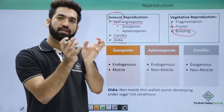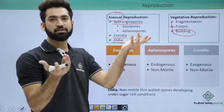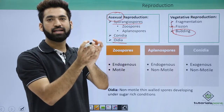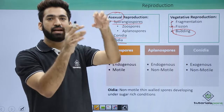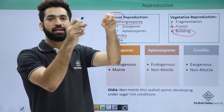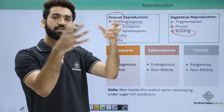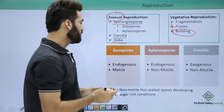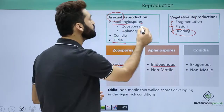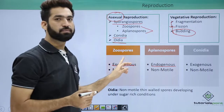Sporangiospores are always endogenous — endogenous means they are packed inside some cavity or structure. That cavity or structure where they are produced is called the sporangium. So the sporangium is the part where sporangiospores are formed.